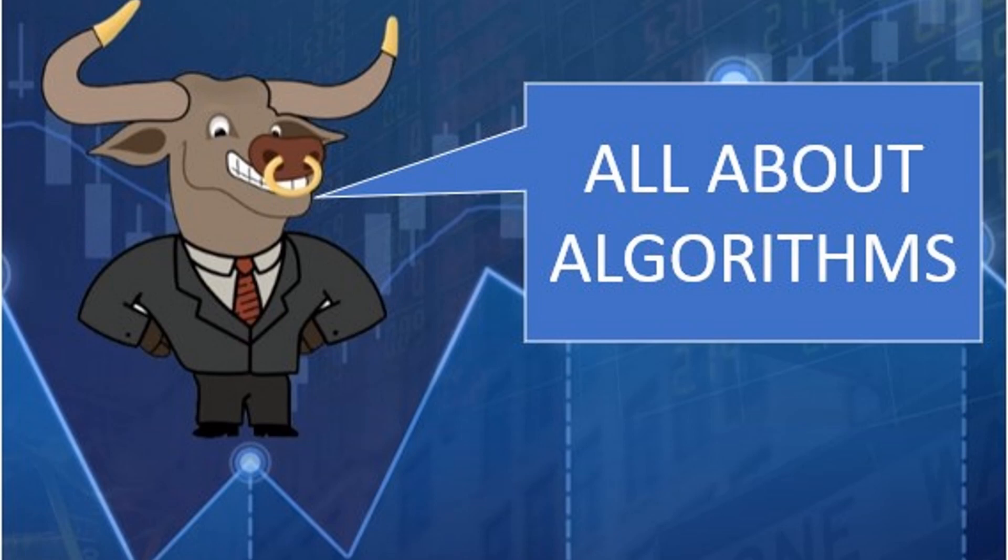I think it's kind of funny when I hear people say, the algos are taking it up, the algos are selling it down. It's like saying the carpenter is using a hammer to drive in a nail. Of course, algorithms are tools that people use, that traders use to get trades executed. When you put in an order with your broker, I would almost guarantee you that it's going into one of their algorithms.